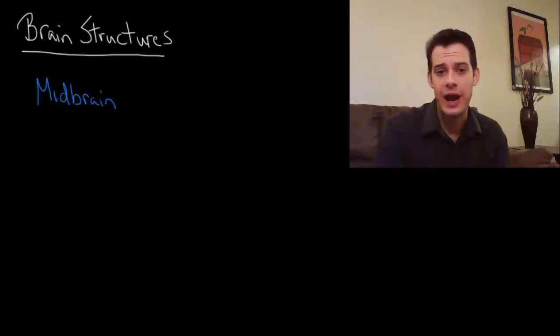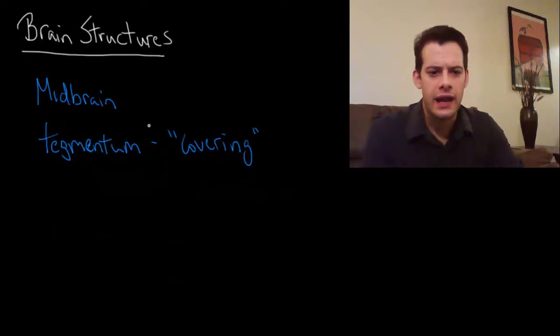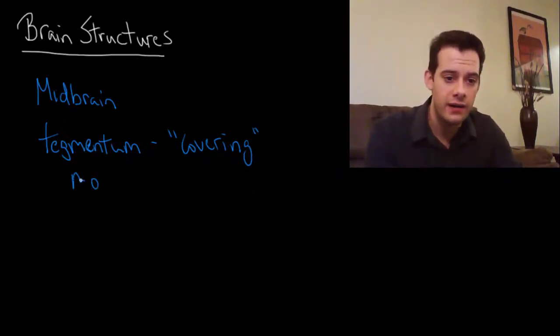We're mostly going to be looking at two areas of the midbrain. The first of these is the tegmentum and this comes from the Latin for covering and one of the roles of the tegmentum is that it's involved in voluntary movement.